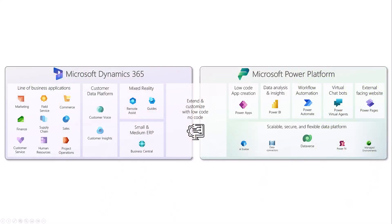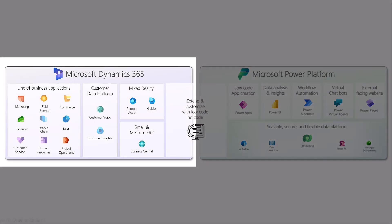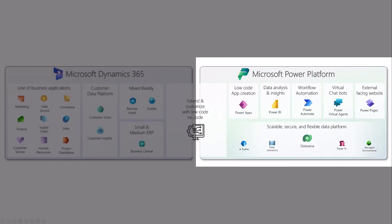The Power Platform is really part of what we call Microsoft Business Applications. Next to the Power Platform you also have Microsoft Dynamics 365, which is a set of business applications with pre-built capabilities to cover specific processes and scenarios — such as Dynamics for Marketing, Dynamics Field Service, and Dynamics 365 Finance. The Power Platform next to Dynamics 365 is the low-code platform for building custom applications, and you can also use it to extend Dynamics 365 with additional capabilities.